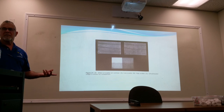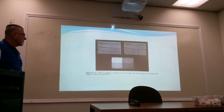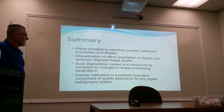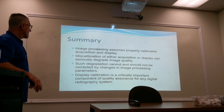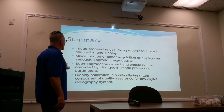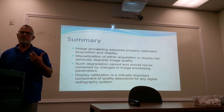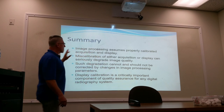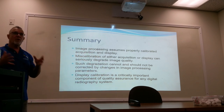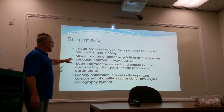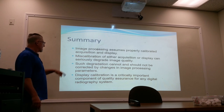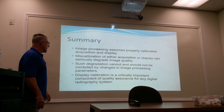You can evaluate the effect of scatter on contrast — low scatter in one image, high scatter in another — and the unsubtracted image is shown for comparison. Image processing QA is so important in the digital world because image processing assumes a properly calibrated acquisition and a properly calibrated display. Miscalibration of either can seriously degrade image quality, and degradation should not be corrected by changes in image processing parameters.